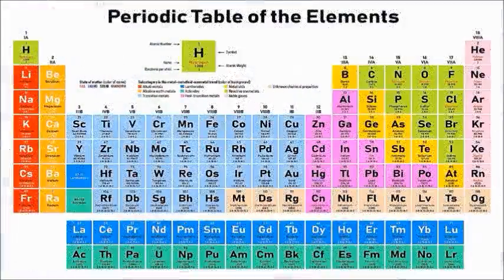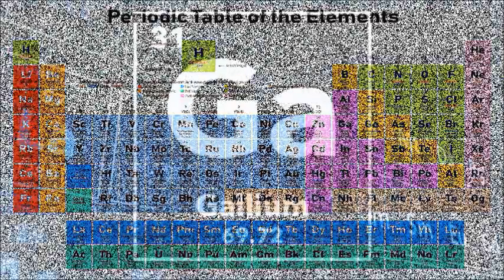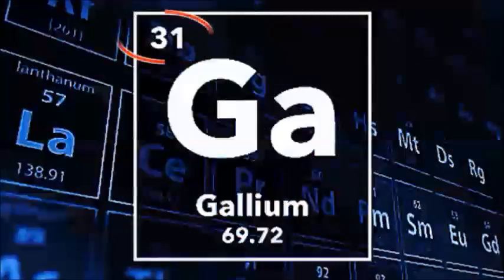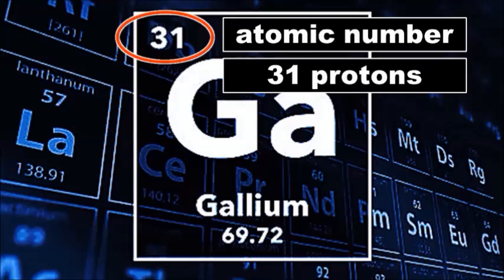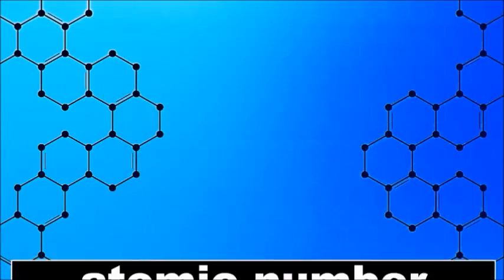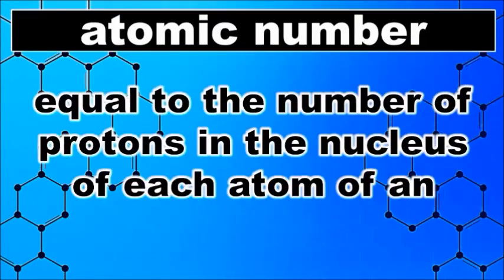Let's take a look at the periodic table of elements and pick one element. For example, the element gallium. Number 31 represents the atomic number of gallium. This means that every atom of gallium has 31 protons. Therefore, the atomic number is equal to the number of protons in the nucleus of each atom of an element.